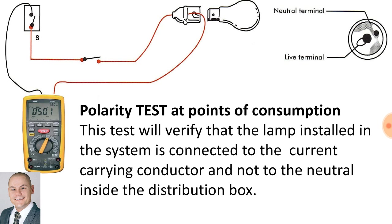To perform a polarity test at the points of consumption, this test will verify that the lamp installed in the system is connected to the current carrying conductor, which is the live phase, and not to the neutral inside the distribution box. One lead of the megger is connected to the center of the Edison bulb and the other lead to the distribution box.